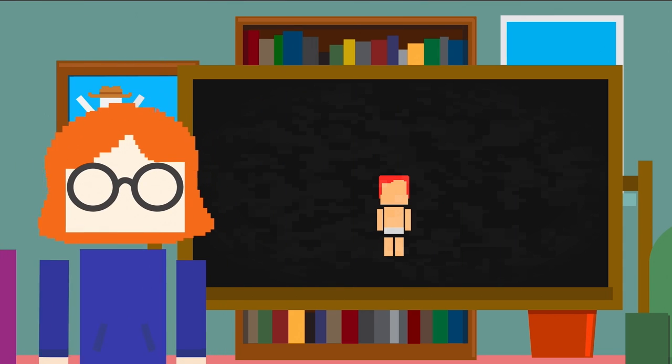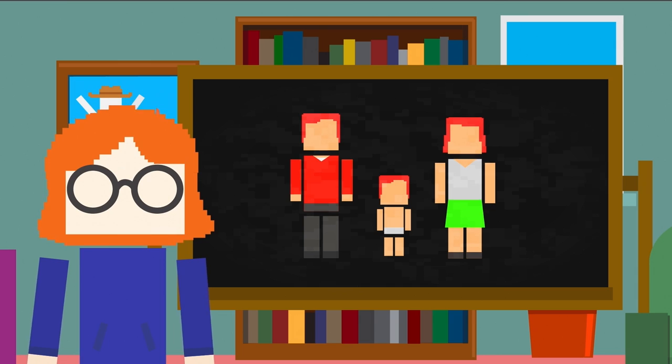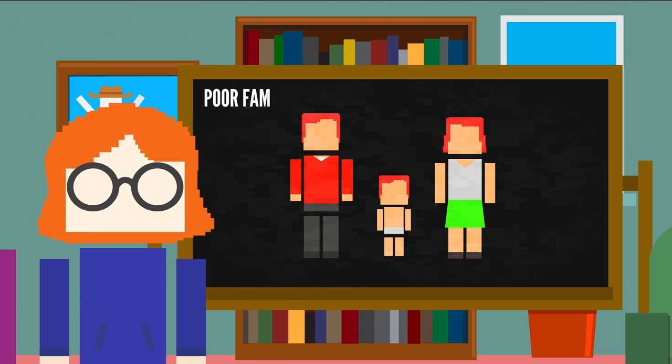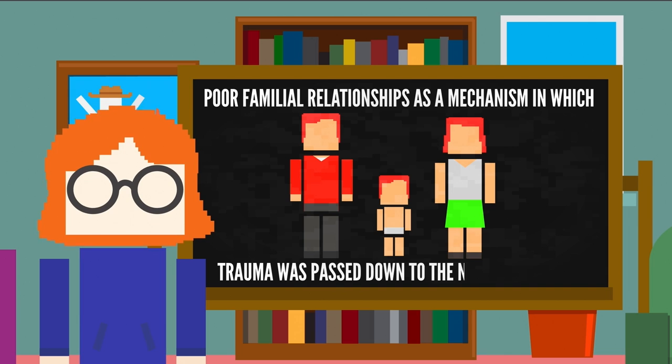This includes social factors in our environment, like our relationships with our parents, which has been found to play a big role in intergenerational trauma. Several of the included studies in the 2017 review paper attributed poor familial relationships as a mechanism in which trauma was passed down to the next generation.